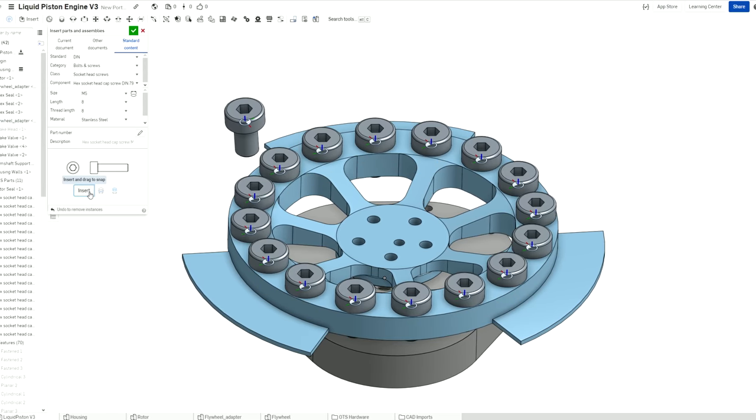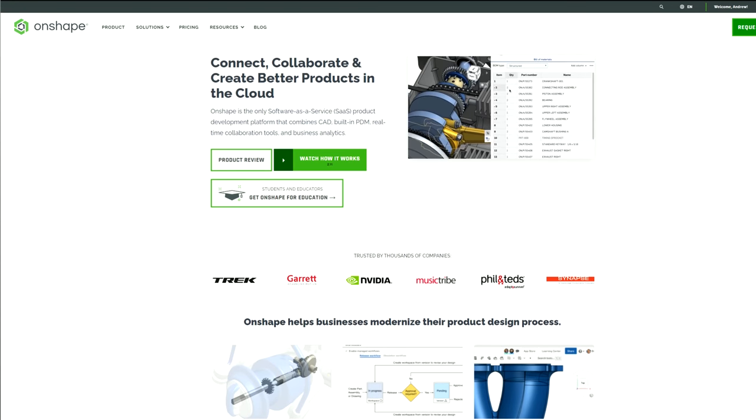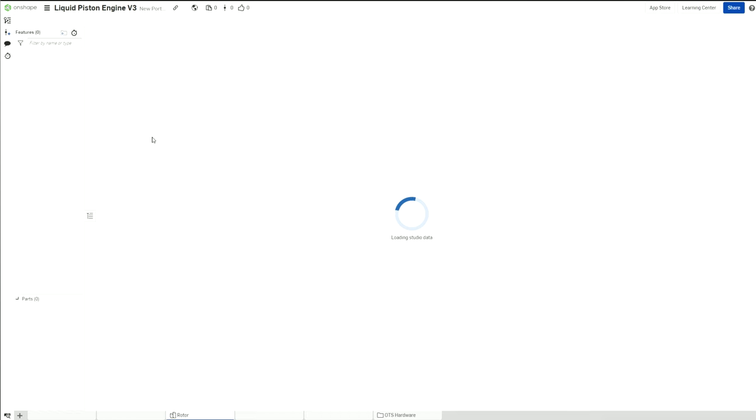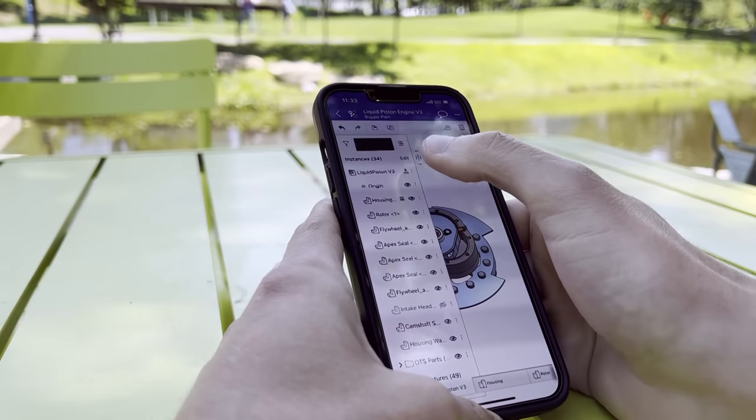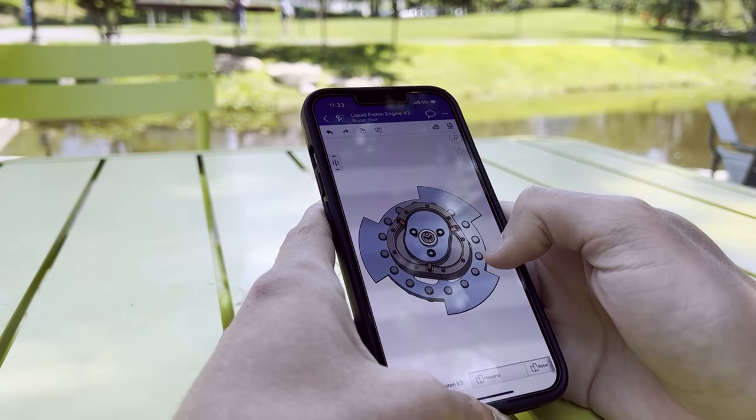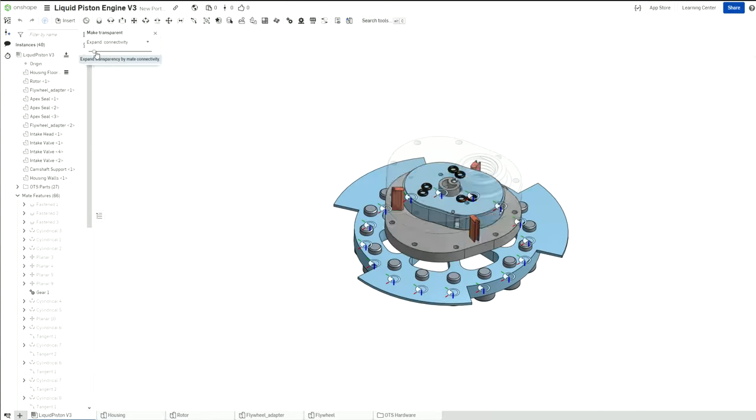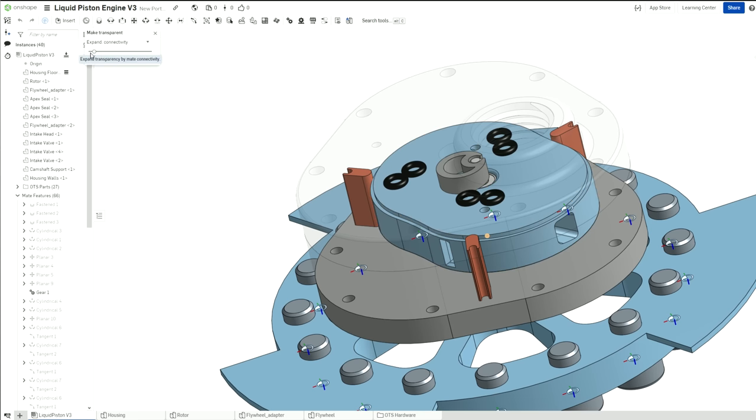If you haven't heard of Onshape yet, the best way to describe it is the Google Docs of CAD. Onshape is a cloud-based CAD and PDM software package, which means no more multi-thousand dollar editing machine. You can access Onshape from the browser of any OS from anywhere, always staying in sync. They even have an app that lets you view and edit models on the go. But being cloud-based doesn't mean you need to sacrifice performance. Onshape is still super smooth and responsive, even when moving and editing really large and complicated assemblies.